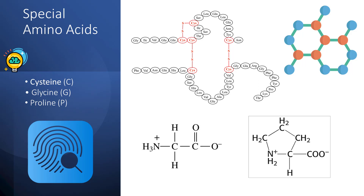Cysteine has a sulfhydryl group that can form covalent disulfide bonds, whilst proline features prominently at tight turns, and glycine plays a role as a helix breaker.